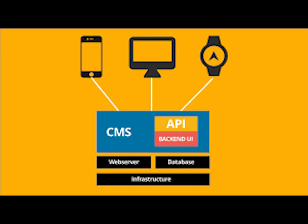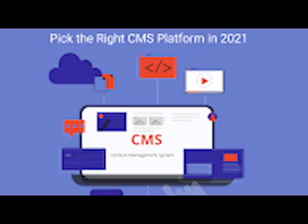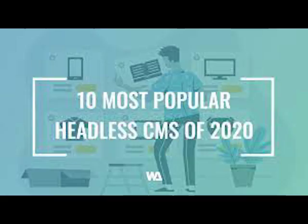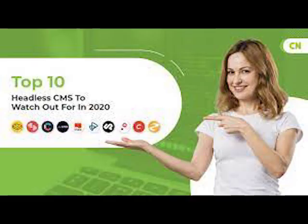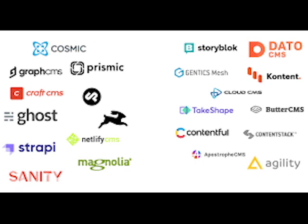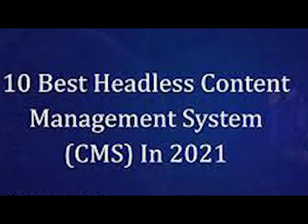Prismic. Launched in 2013, Prismic is a SaaS headless CMS trusted by many enterprises such as Google, Netflix, and Deliveroo. The tool allows you to choose the technology, framework, and language, and thereafter easily manage and deliver the content. It supports native integrations with e-commerce platforms such as Shopify and Magento. Prismic proposes free, premium, and enterprise plans. Scheduling and previews, multi-language, full revision history, and dynamic layouts are some of the features that make Prismic one of the most popular headless CMS of 2020.